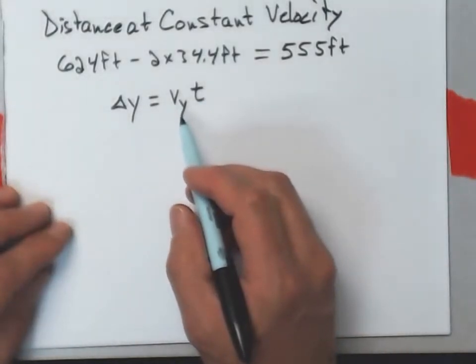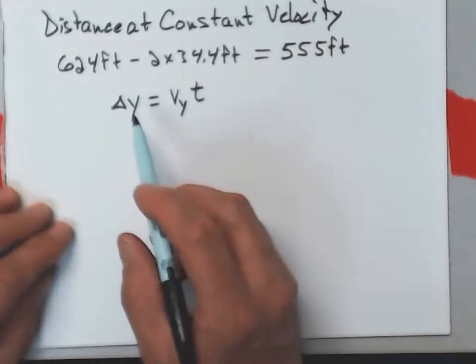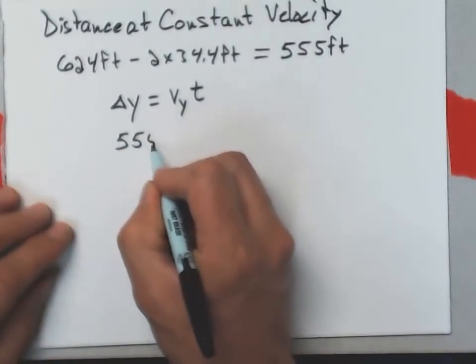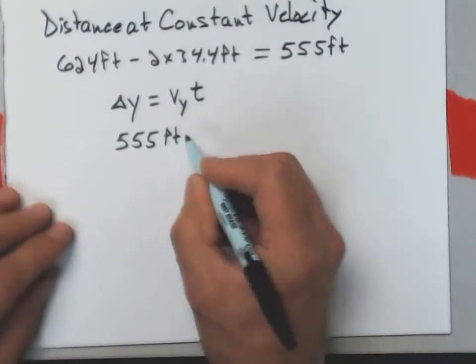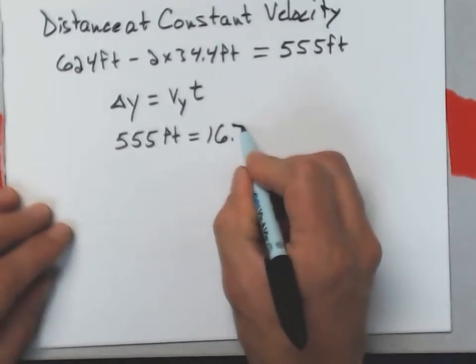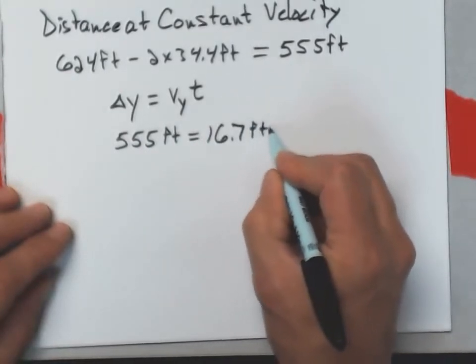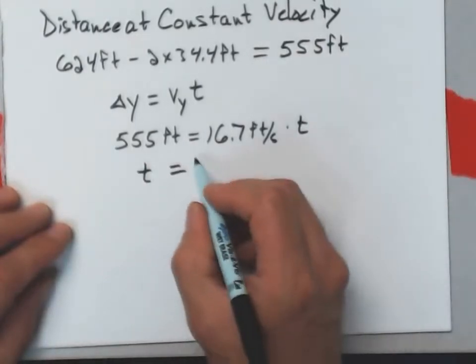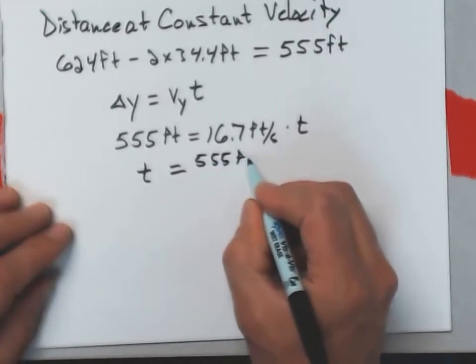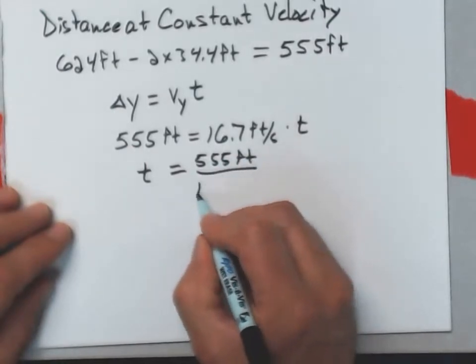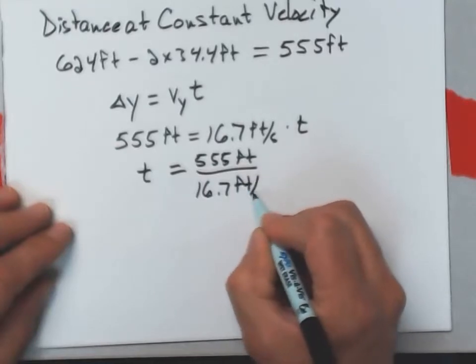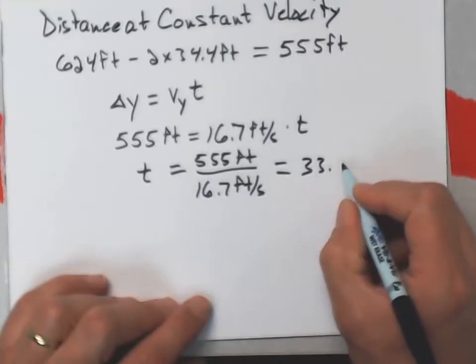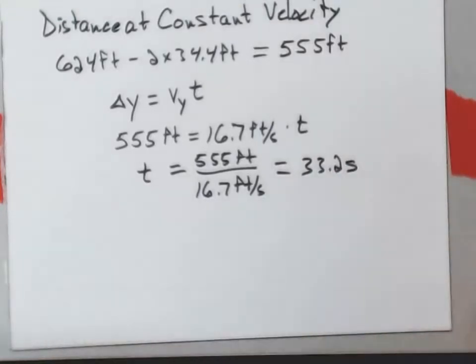The v sub y is that 16.7 feet per second that it's been going at. The delta y is 555 feet. So 555 feet is going to equal 16.7 feet per second times t. That time interval ends up being 555 feet divided by 16.7 feet per second, and I get 33.2 seconds.